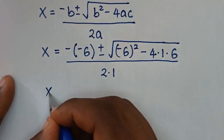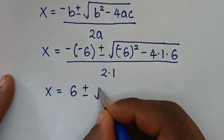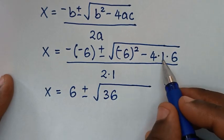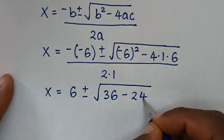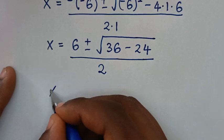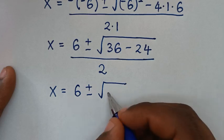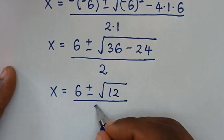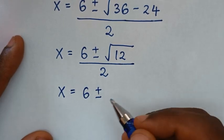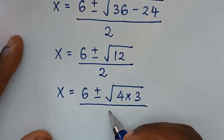Simplifying: negative times negative 6 gives positive 6. Then (negative 6) squared is 36, and 4 times 1 times 6 is 24. So it becomes x equals 6 plus or minus square root of 36 minus 24, which is 12, all over 2. The square root of 12 can be written as square root of 4 times 3, all over 2.